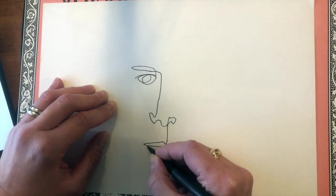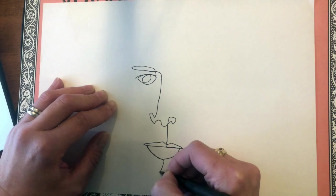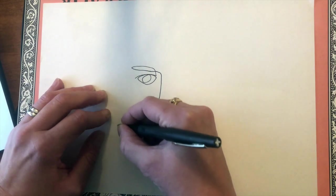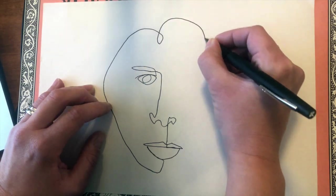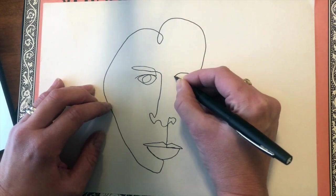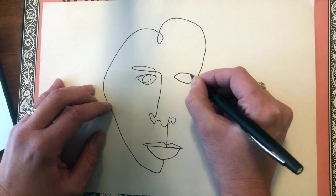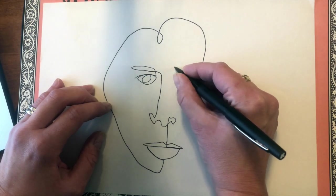Sometimes you can trace over the same line just to help you get from one place to the other. Oops, that's pretty wide. I need to get to this other eye. These drawings are a lot of fun because you can kind of relax a little bit.